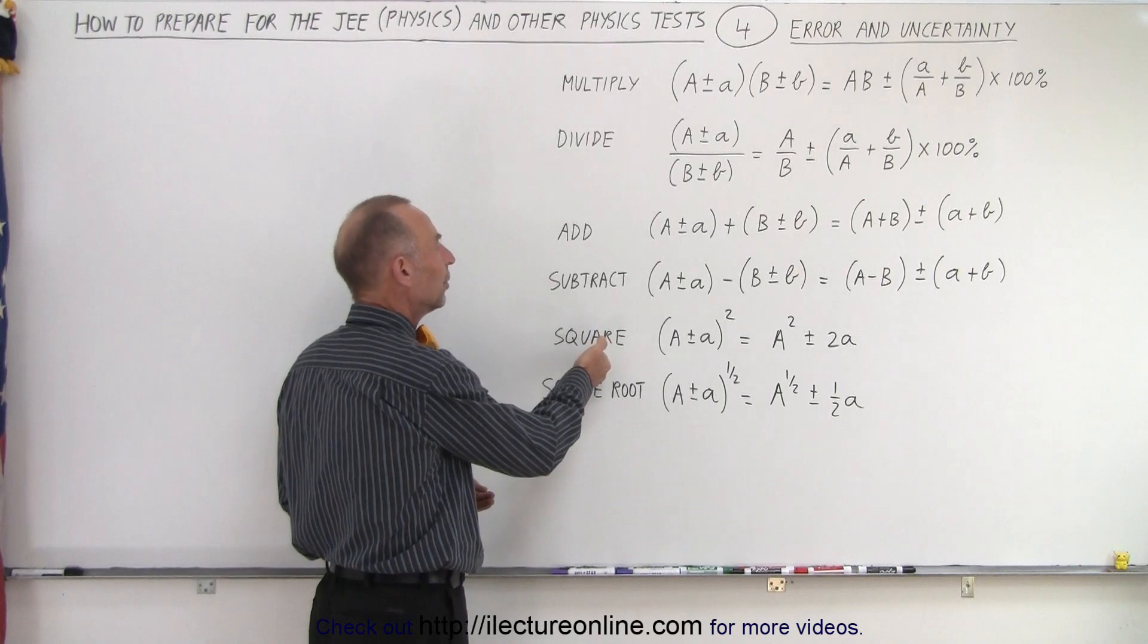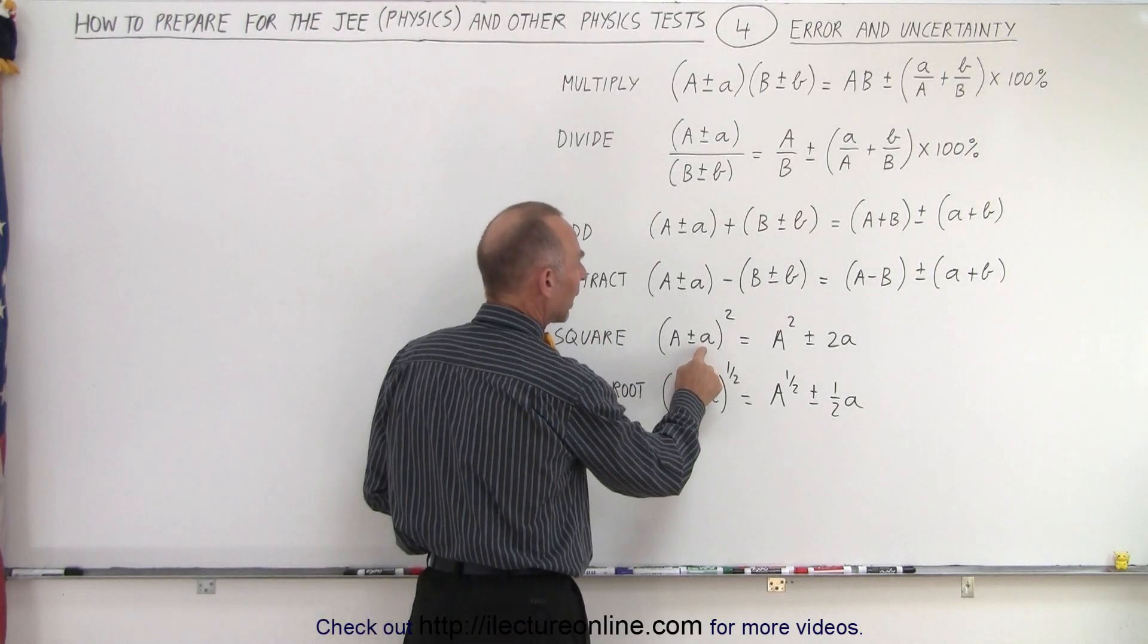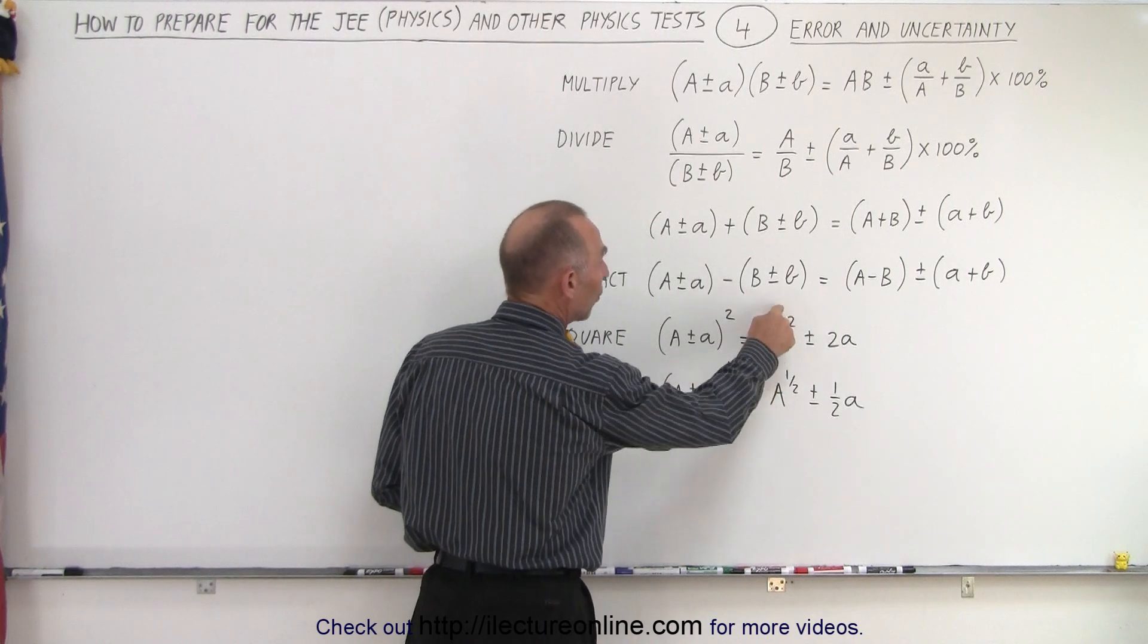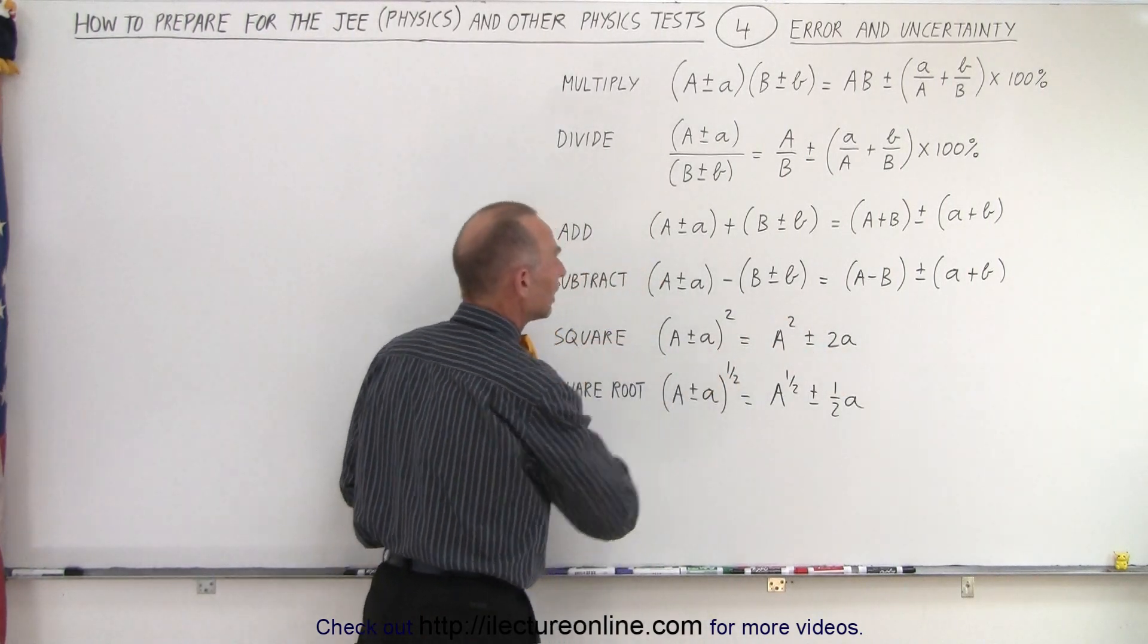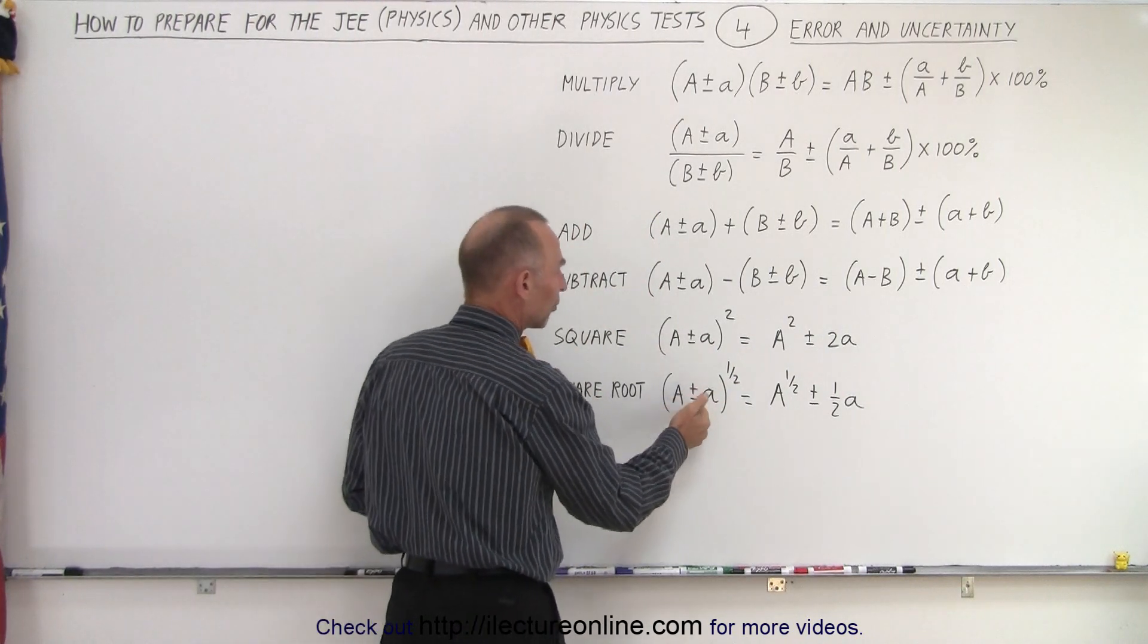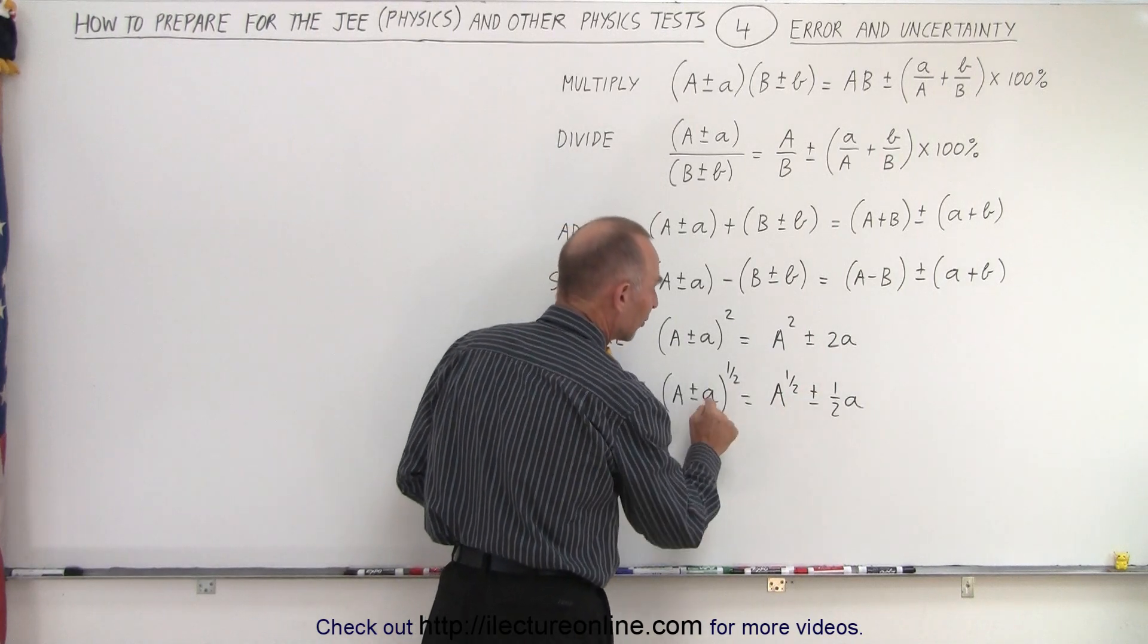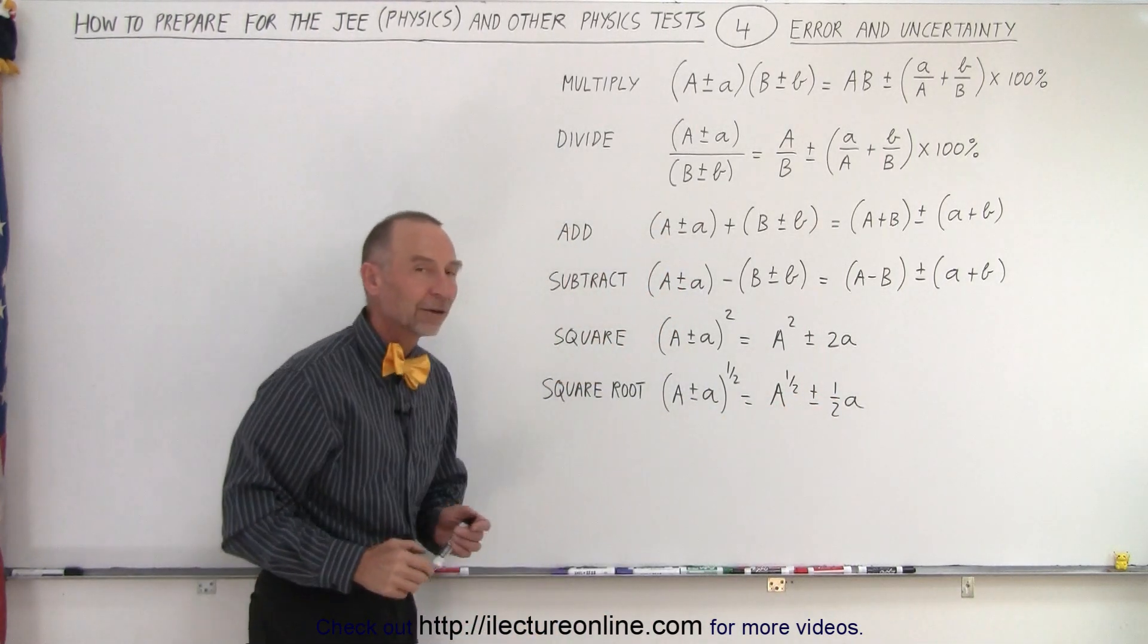When we square a number, for example, A plus or minus the uncertainty small a, that's the same as A squared plus or minus twice the uncertainty in the measurement. And if we take the square root, A plus or minus a, then we get the square root of A plus or minus half the uncertainty that we had in our measurement.